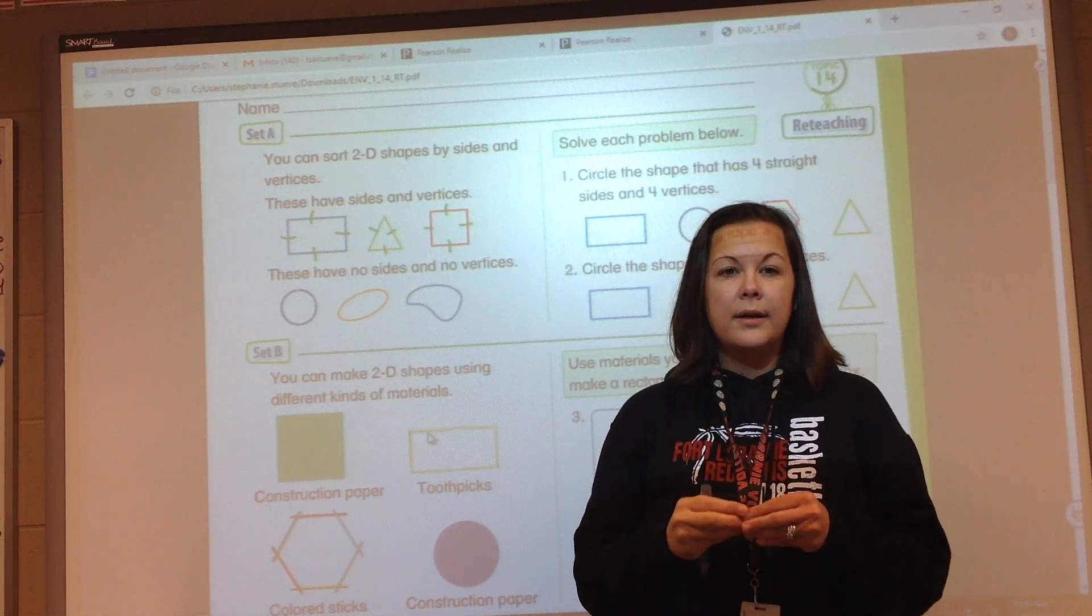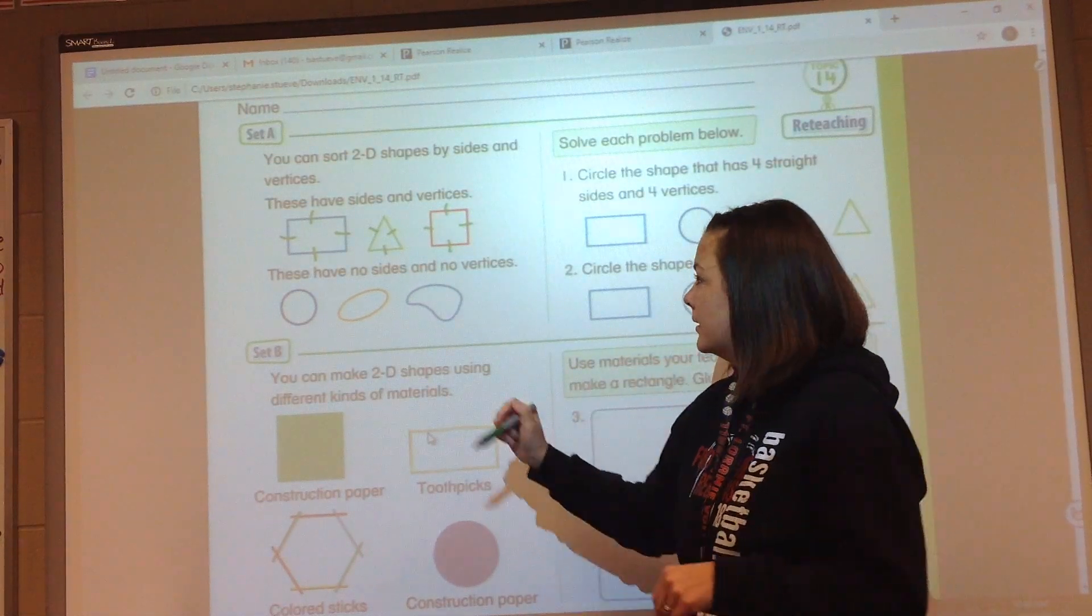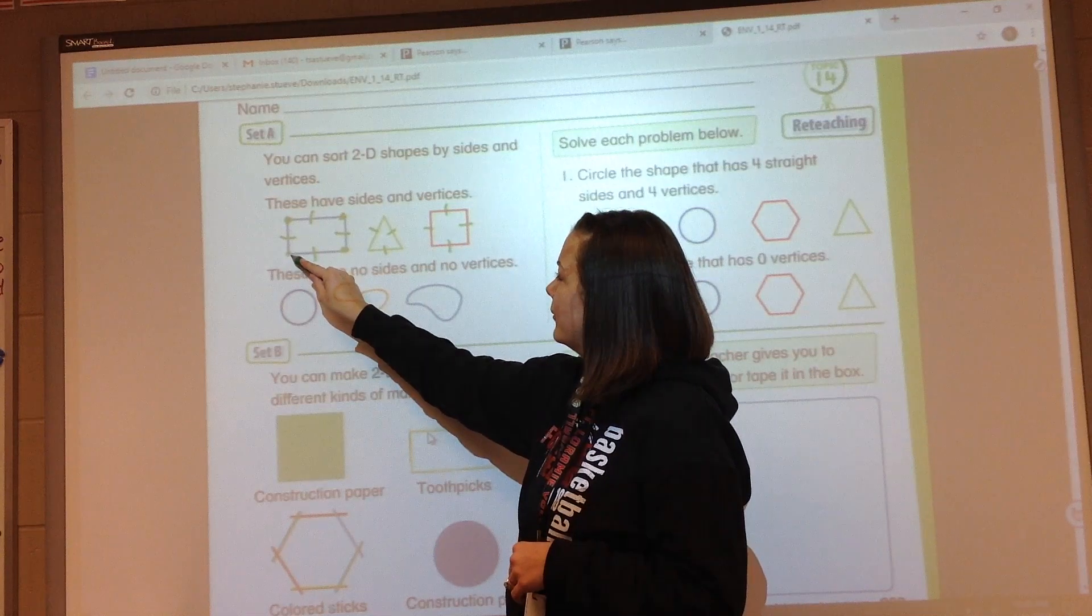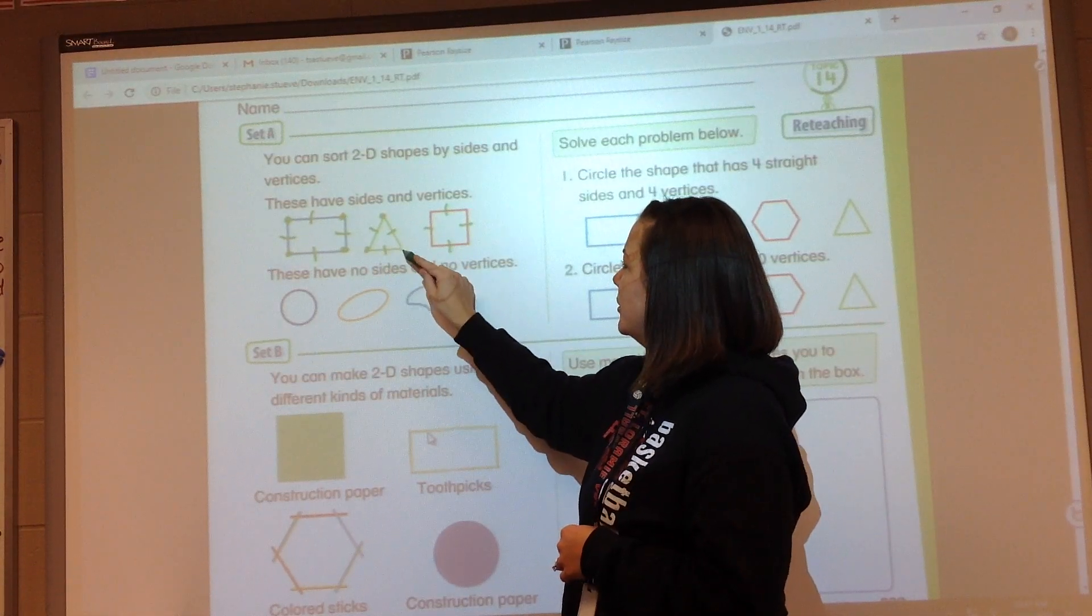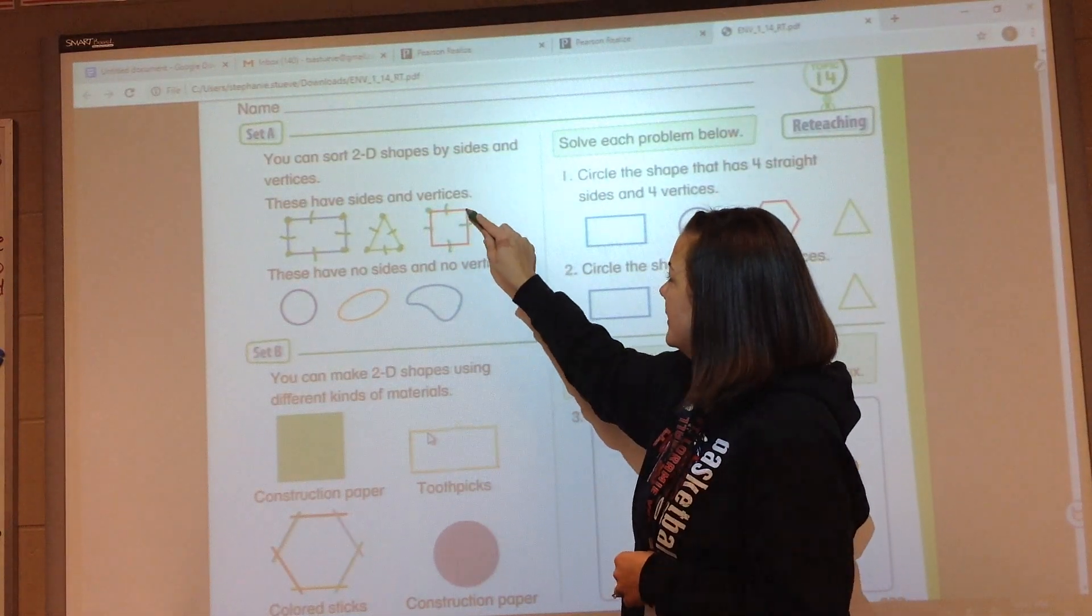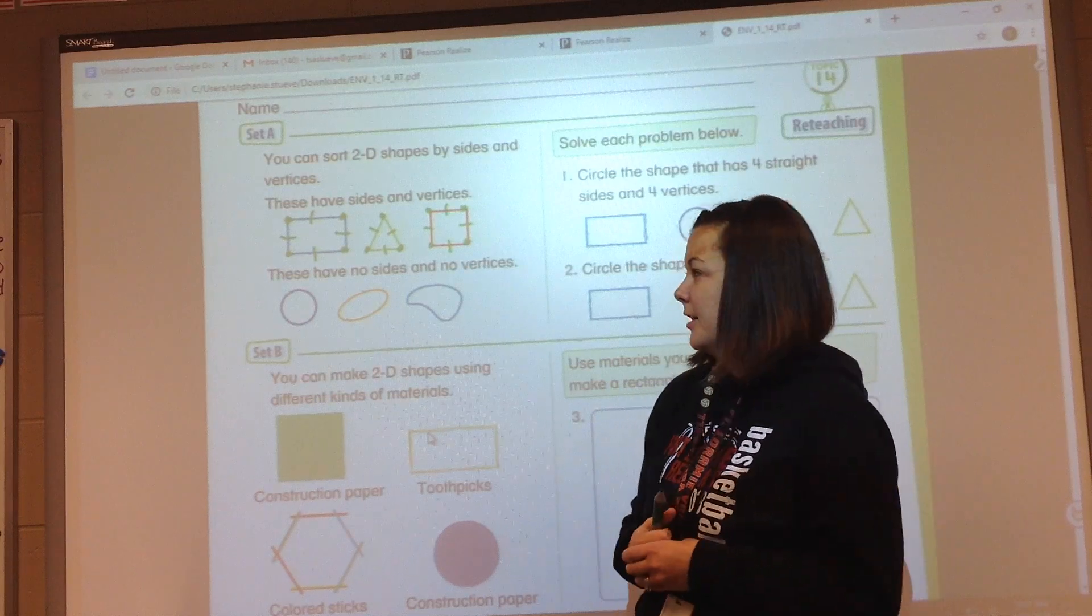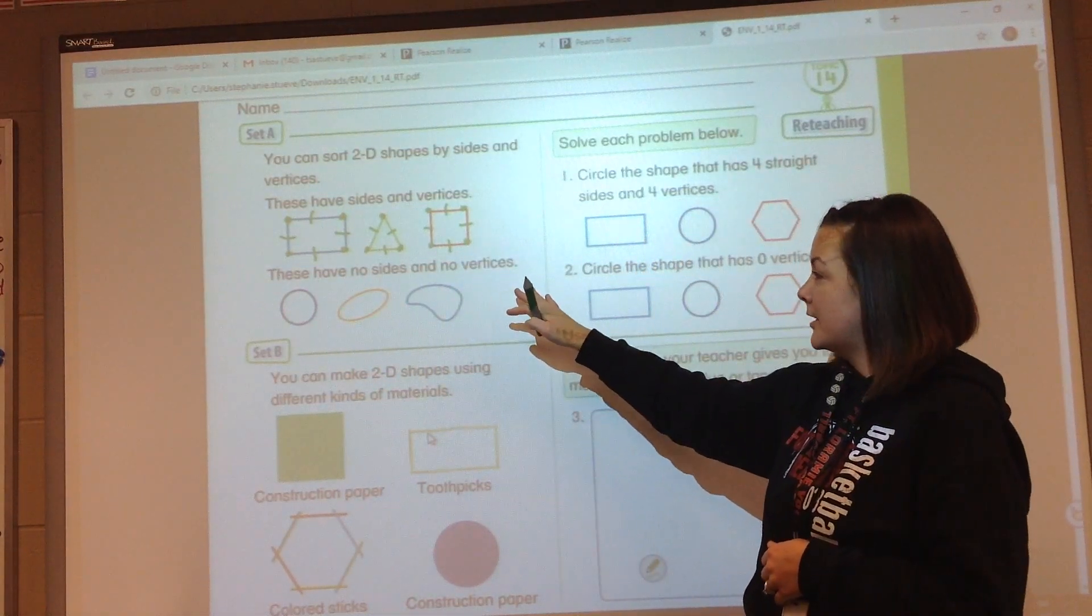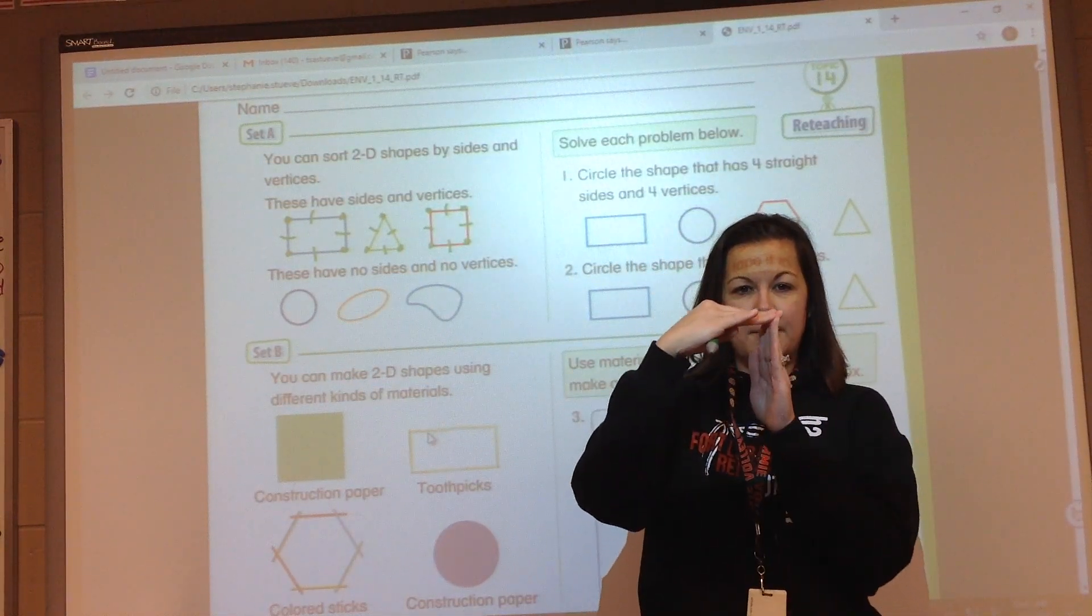Now next we want to mark the vertices. The vertices are where the two sides come together to make that point. So we have one, two, three, four, four vertices for our rectangle. One, two, three, three vertices for our triangle. One, two, three, four, four vertices for our square. Now this says these have no sides and no vertices. There are no straight lines coming together on all of these that come to form a point or a vertex.